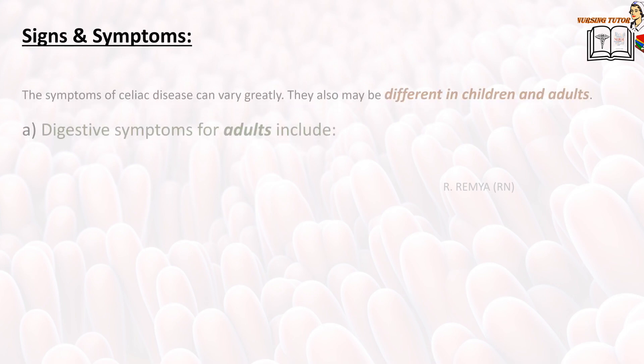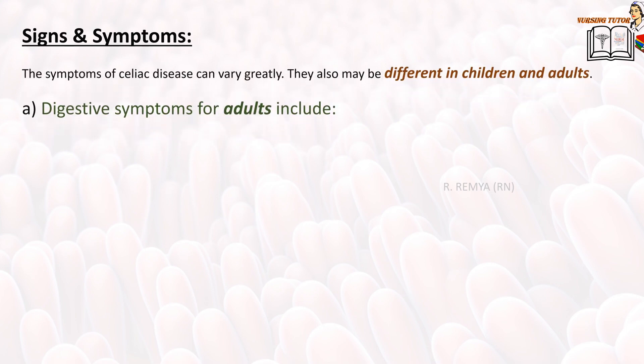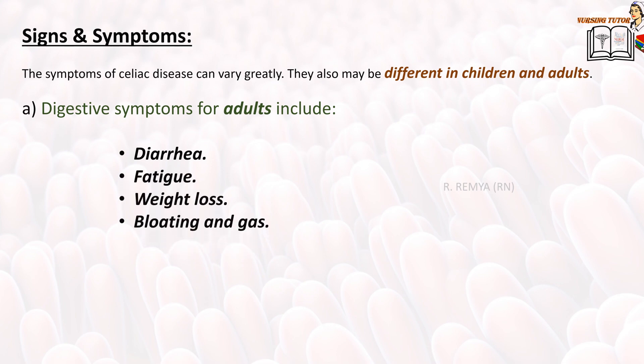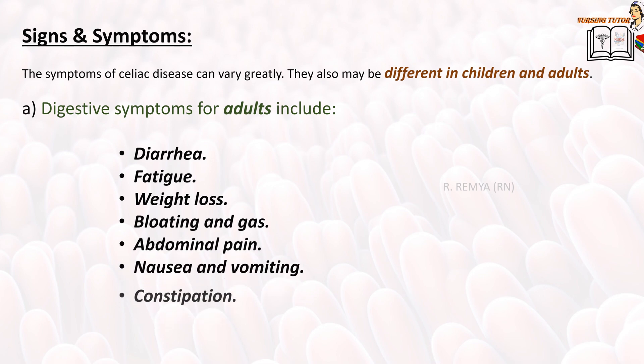Signs and symptoms of celiac disease: the symptoms can vary greatly and may be different in children and adults. Digestive symptoms in adults include diarrhea, fatigue, weight loss, bloating and gas, abdominal pain, nausea and vomiting, and constipation.